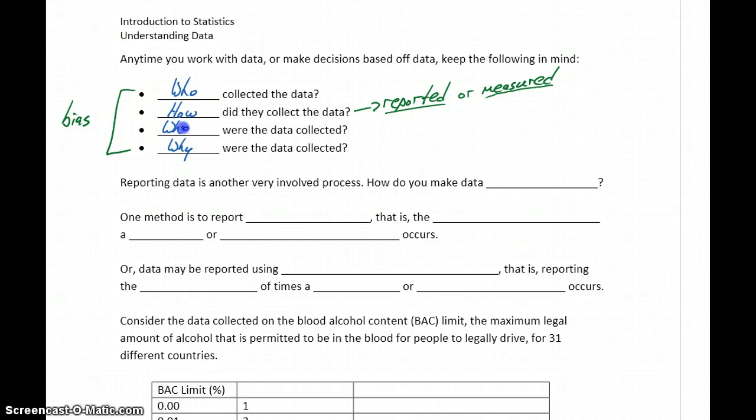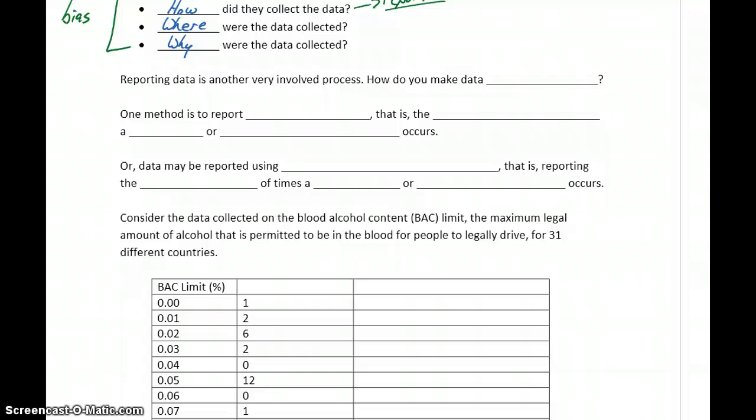We also want to think about where data was collected. So if you're interested in finding out information about people living in the United States and you reference a survey that was conducted in England or Russia, Australia, that may not be very useful information. Or if what you want to know is something about the spending habits of urban 20 to 30 year olds, so people living in cities or suburban areas and you're looking at data from people who live in small towns. Again, you're not getting very reflective information. So you want to make sure data is being collected in an area that makes sense. Any of these things can just cause flaws in your data or cause your data to not be an accurate reflection of what you're actually trying to measure or understand.